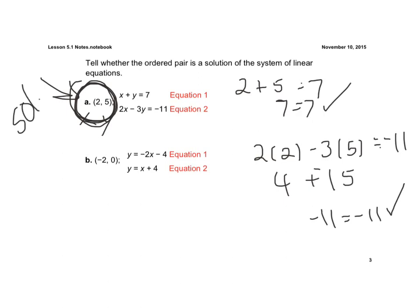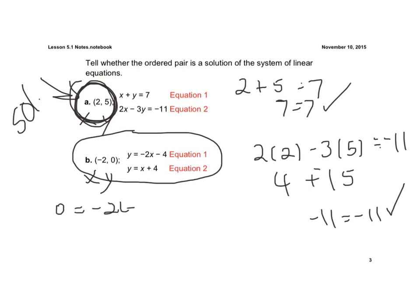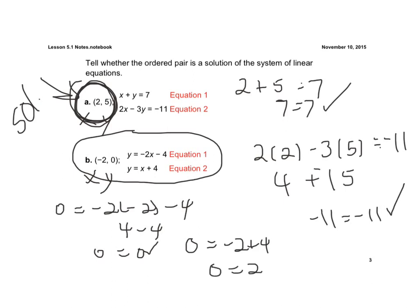Now let's check the second system, where negative 2, 0 is proposed as a solution. It's x followed by y. For the first equation: 0 equals negative 2 times negative 2 minus 4. Negative 2 times negative 2 is positive 4, minus 4 is 0, and 0 equals 0 — that checks. For the second equation, plugging in y equals 0 and x equals negative 2: negative 2 plus 4 is 2, and 2 does not equal 0.